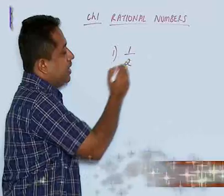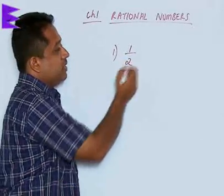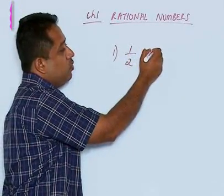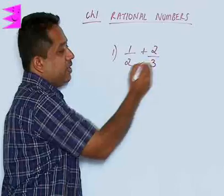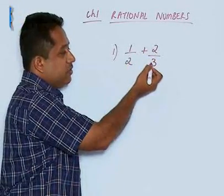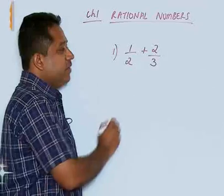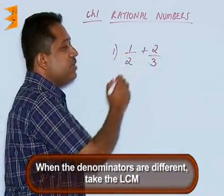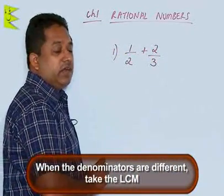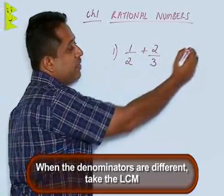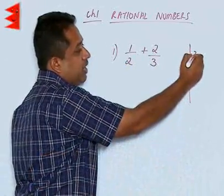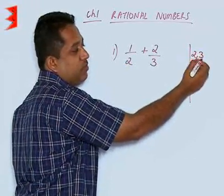Let us say we are given a number 1 by 2 which is a rational number and we have to add it to another rational number 2 by 3. This is a rational number, this is also a rational number, but here the denominators are different. When the denominators are different, we simply cannot add the numerator and get the answer. We will have to take the LCM of 2 and 3. Here I am going to show you how to take the LCM of 2 and 3.